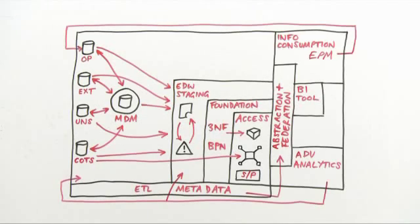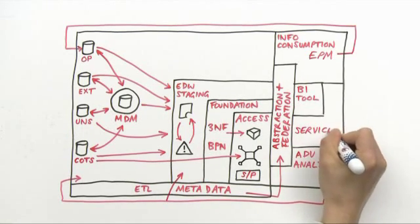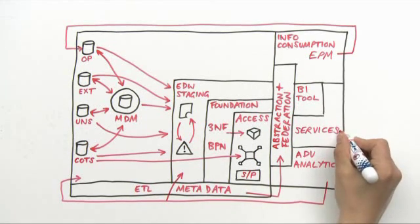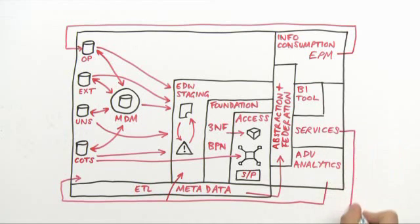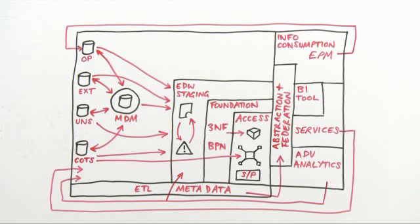The best way to do this integration is not via data copies, but to make the BI available as a service — either as the consumption of a measure or a dimension, or as the consumption of a report. This gives us our last feedback loop from the services layer back to the information sources, either to be consumed by an operational system or by a composite business process running over multiple applications, including business intelligence.